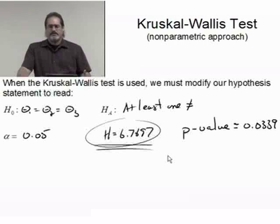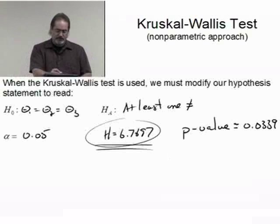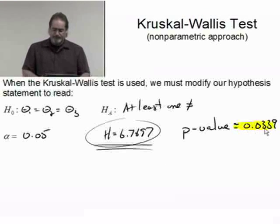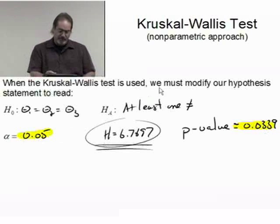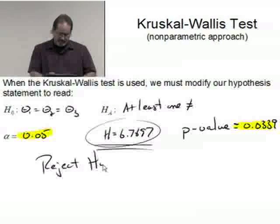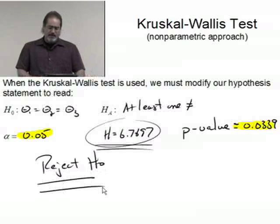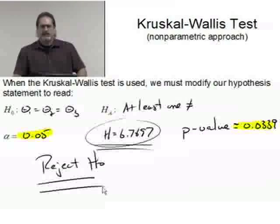The common notation for the test statistic in the Kruskal-Wallis is an H. The p-value is really what I'm interested in here, 0.0339. Now compare that with my alpha, 0.05. This is suggesting that we reject the null hypothesis. Reject H₀.